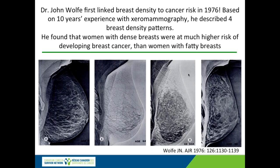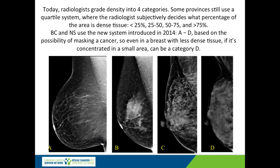We've known since the 1970s that breast density is related to cancer risk. Dr. Wolf described four density patterns and found that women with dense breasts were at much higher risk of developing cancer than women with fatty breasts. Radiologists still grade density into four categories. Some provinces use the old quartile system where the radiologist subjectively decides what percentage of the tissue is dense — less than 25%, 25 to 50%, 50 to 75%, and greater than 75%. A new ABCD system introduced in 2014 is based on the possibility of dense breast tissue masking a cancer.